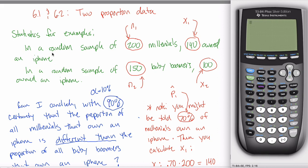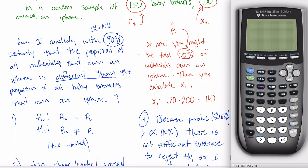I'm going to use the same example because I'm so tired of making these, where we have a sample of 200 millennials and 140 of them own an iPhone, and we have another sample of 150 baby boomers and 100 of them own an iPhone. Last time we were trying to conclude that the proportion of all millennials that own an iPhone is different than the proportion of all baby boomers.